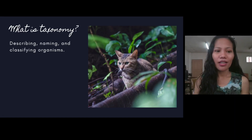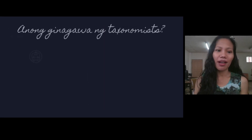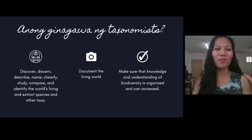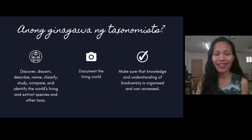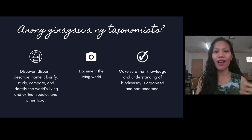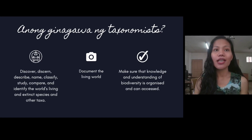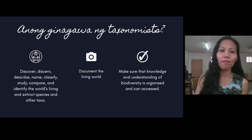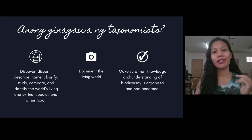What do taxonomists do? If you are a taxonomist, you have to discover, describe, name, and classify. Taxonomists devise ways to describe, name, and classify by studying and comparing both living and extinct species. What better way to do that than to explore? That's why I chose a backpack as the icon — because you go out and explore.